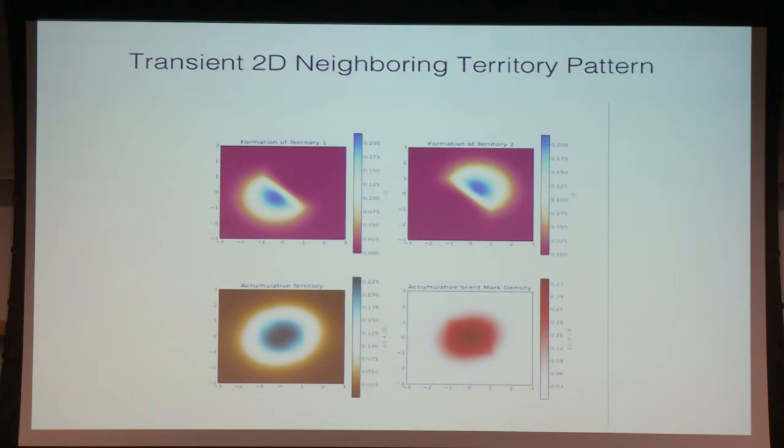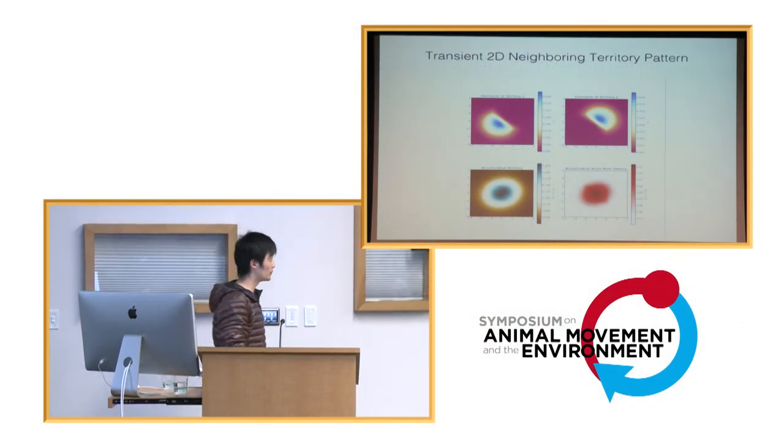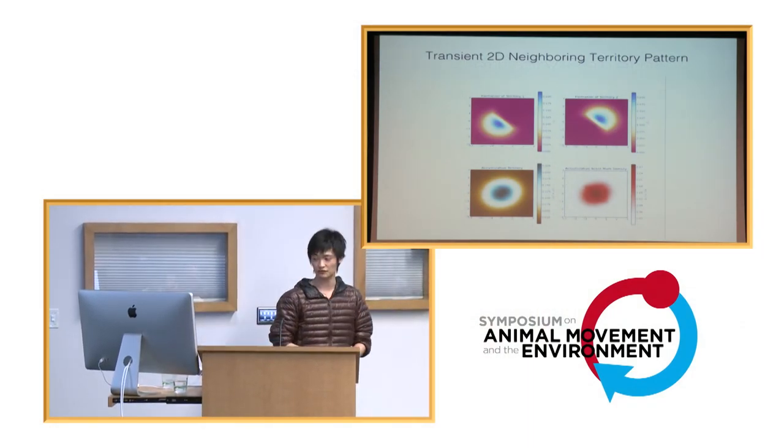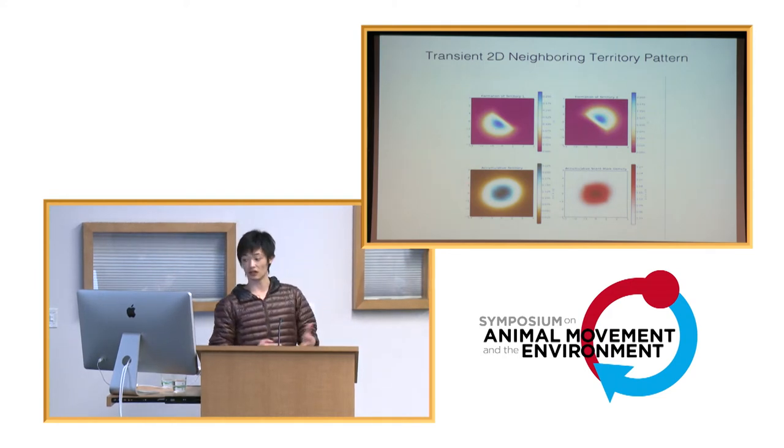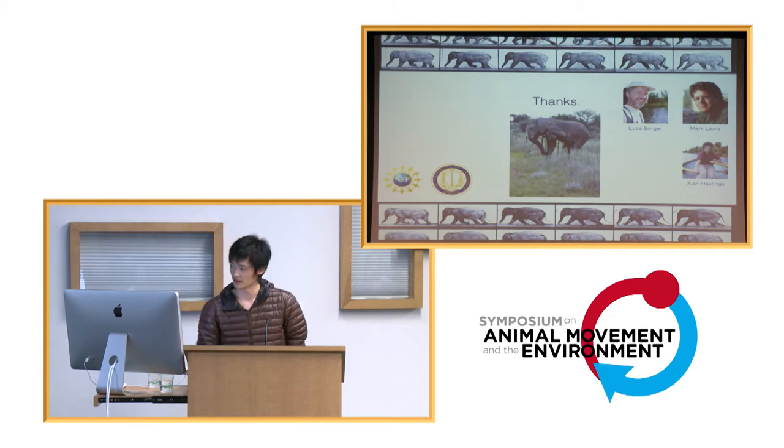And currently, my PI, Alan Hastings, and Mark Lewis, Luca Borger, and I, we're writing a review paper on Transient Movement Ecology for Ecology Letters. So, if you guys have any ideas, please let me know. And thank you.